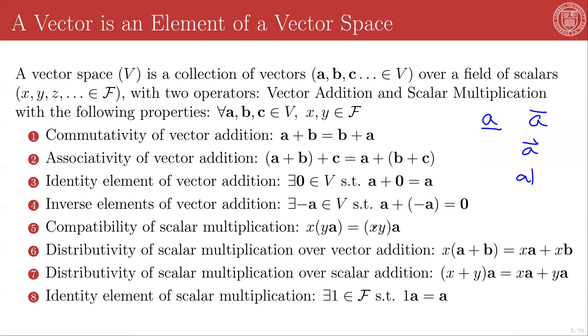There has to be compatibility with scalar multiplication, which means that scalar X times the quantity Y times the vector A is the same as the product XY times the vector A. There has to be distributivity of scalar multiplication over vector addition, and so X times the quantity vectors A plus B must be equal to XA plus XB. There's the distributivity of scalar multiplication over scalar addition, and so the quantity X plus Y times the vector A must be the same as XA plus YA. And finally, this is tying into the existence of that identity element in the scalar field, there's the identity element of scalar multiplication. And so there's going to be that scalar element, this is the multiplicative scalar element, in the field that the vector space is defined over, such that that scalar 1 times any element of the vector space A gives you back the same element of the vector space A.